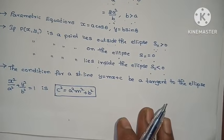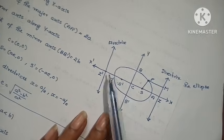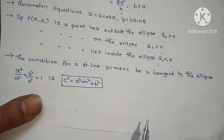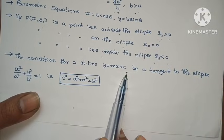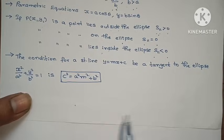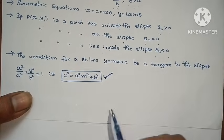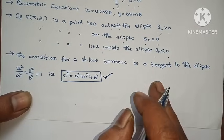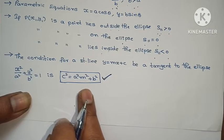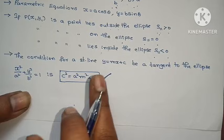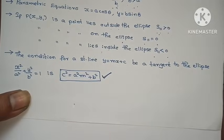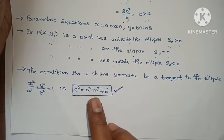Next: y equals to mx plus c. The line mx plus c is a tangent. The condition for the straight line y equals to mx plus c to be a tangent to the ellipse x² by a² plus y² by b² equals to 1 is: c² equals to a²m² plus b².